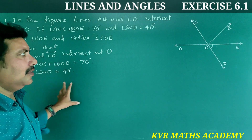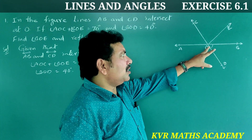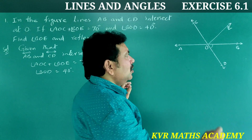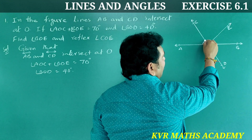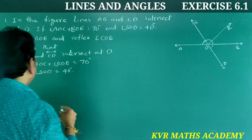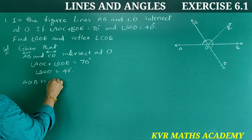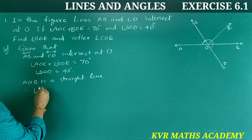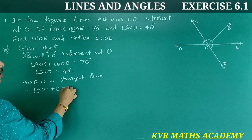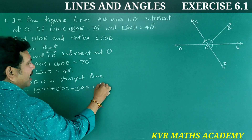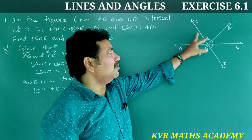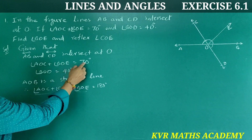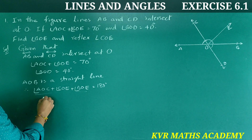Let us first take AB as a straight line. AB is a straight line, so the sum of angles on it is 180 degrees. Therefore, angle AOC plus angle COE plus angle BOE is equal to 180 degrees. Sum of the angles on the straight line. Already, angle AOC plus angle BOE is 70 degrees.